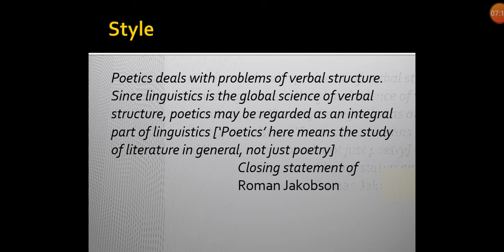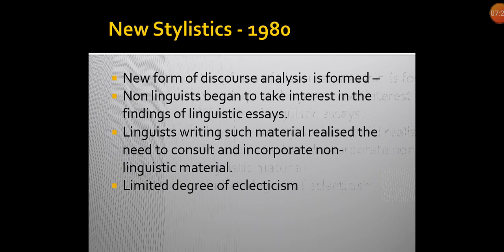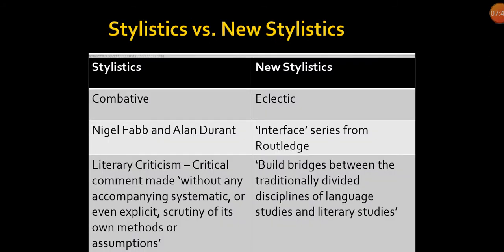So a war began between the linguists and the literary critics. This ongoing war went on for some time, and later on, around the 1980s, they came to a compromise — they understood that literary critics needed linguists and linguists needed non-linguists. There are some differences between old stylistics and new stylistics: while old stylistics isolates itself, new stylistics is more encompassing and inclusive.